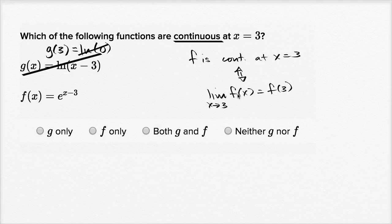And you could even do this little test here. The limit of e to the x minus three as x approaches three is going to be e to the three minus three, or e to the zero, or one. And so f is the only one that is continuous.